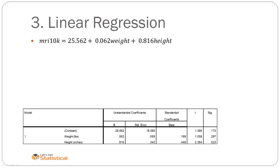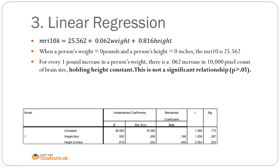For now we need to remember how to write out the regression equation. It takes a similar format as before except this time we have an additional IV at the end with an additional gradient. We can still say exactly the same things though. We can talk about the y-intercepts and then the two gradients. We start off talking about the y-intercept by saying when a person's weight is equal to zero and a person's height is equal to zero, their MRI 10K is 25.562 or the y-intercept.